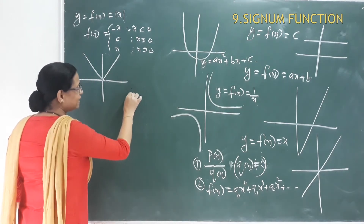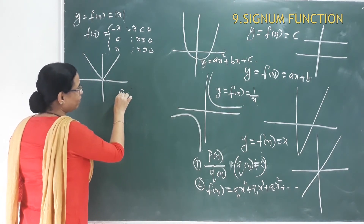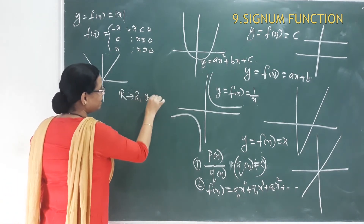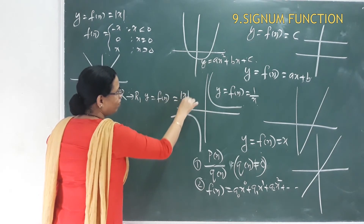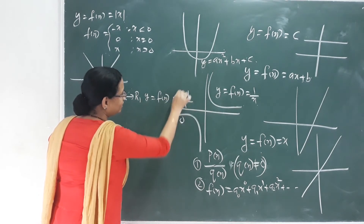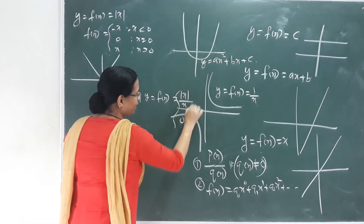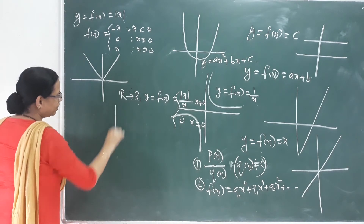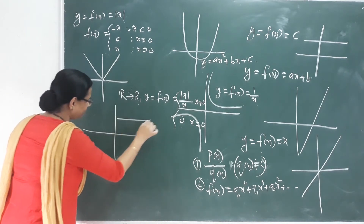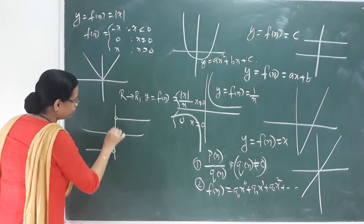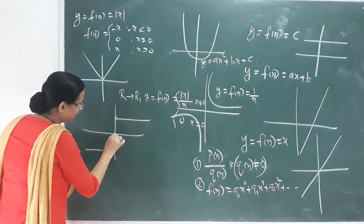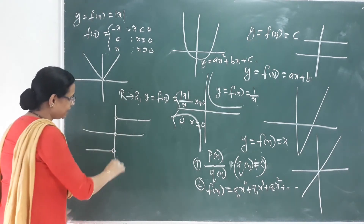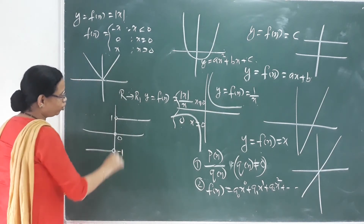This is the signum function. The real function f from R to R is defined by y = f(x) = |x|/x where x ≠ 0, and 0 where x = 0. On the graph, the endpoints are not included except at 0. The range of the signum function is {-1, 0, 1}.